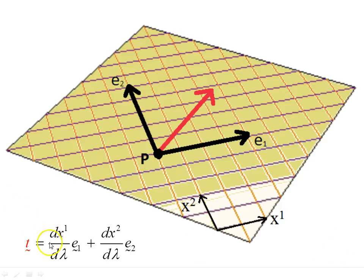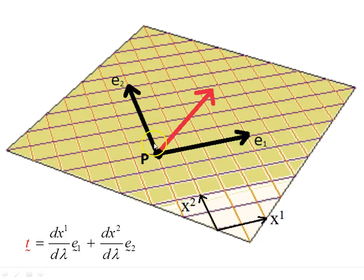Here's our tangent vector written out with basis vectors e1 and e2, with components dx1/d lambda and dx2/d lambda. On the tangent plane we have the tangent vector T in red, the first basis vector e1 in the x1 direction, and e2 in the x2 direction. Writing the tangent vector out in this flat Euclidean plane gives us this expression.